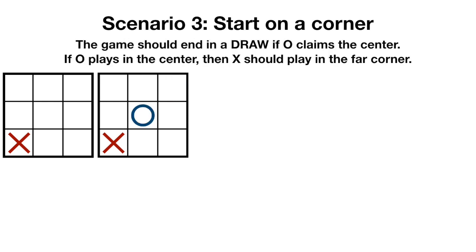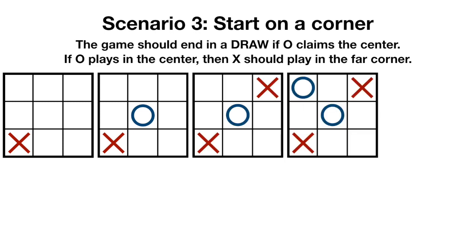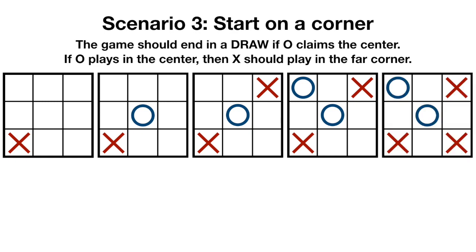Even if O claims the center for its first move, there's still a chance that x might win. X should claim the far corner, then if O claims another corner, x will win by creating a double threat.